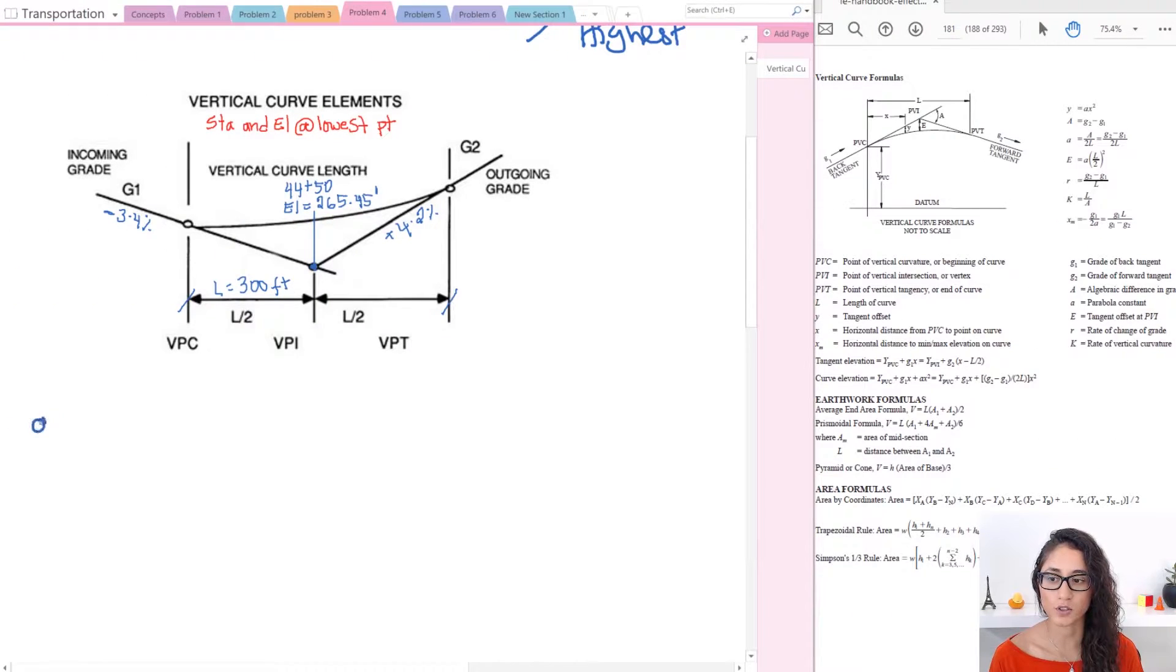Let's first write the equation for the station at the lowest point. This is equal to the station at PVC plus XM. So this is the station at PVC and we're going to add XM, which is the horizontal distance to the minimum or maximum elevation on the curve. For our case it's going to be the minimum elevation because we have a sag curve.